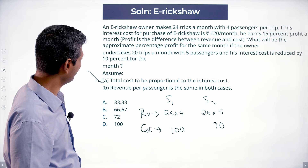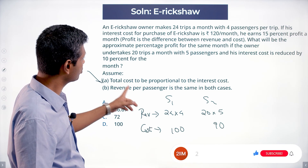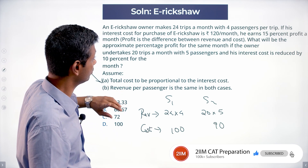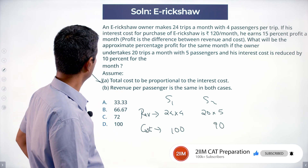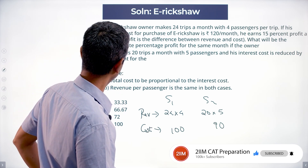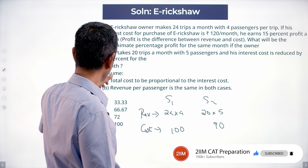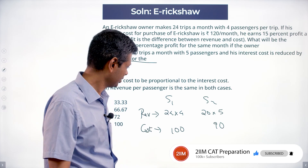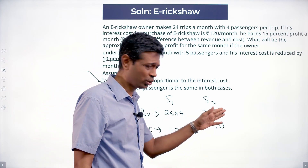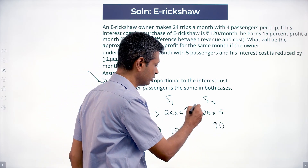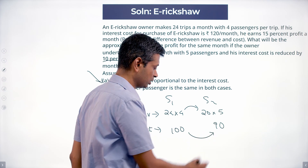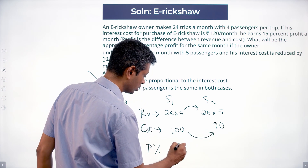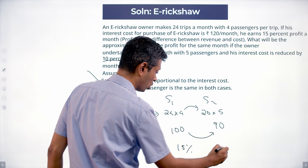Interest cost is down by 10%, and total cost is proportional to interest cost, so total cost is also down by 10%. So in Scenario 2, cost goes from 100 to 90. The revenue becomes 24×4 in Scenario 1 and 20×5 in Scenario 2, and the cost changes accordingly. The profit percentage is 15% in Scenario 1 — what will it be in Scenario 2?